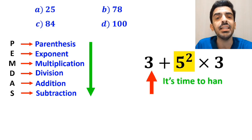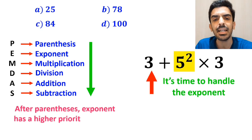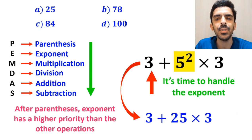And the next step, it's time to handle the exponent, because after parentheses, exponent has a higher priority than the other operations. So, we rewrite this expression as 3 + 25 × 3.